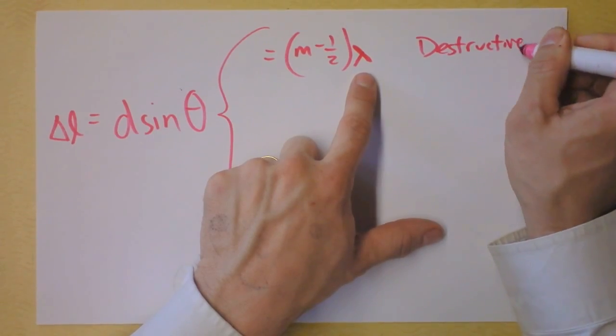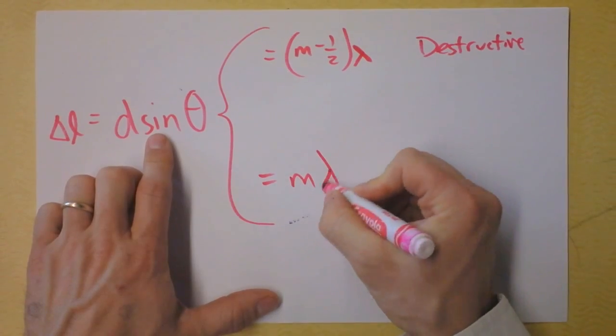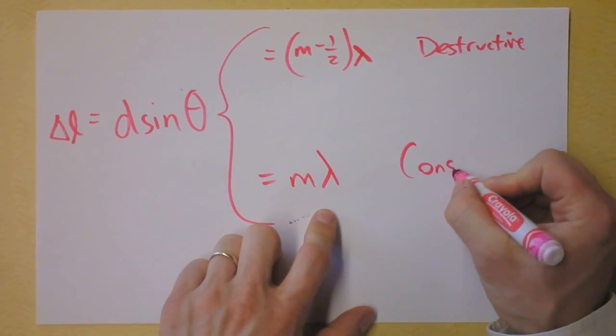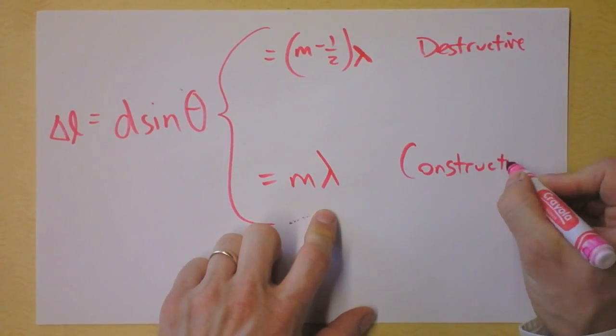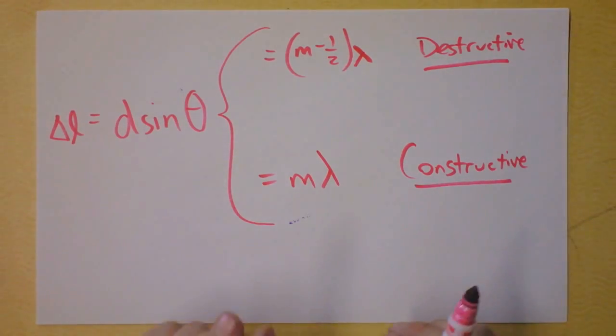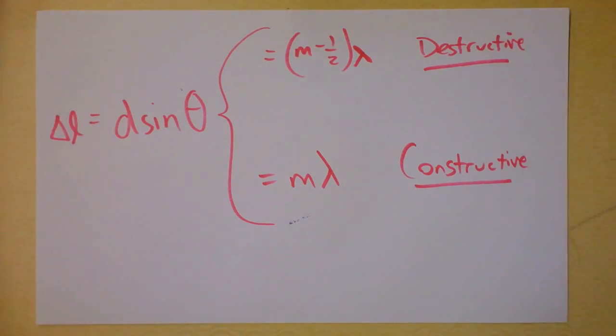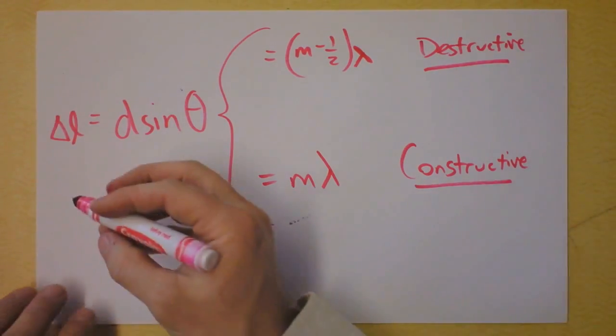if D sine theta is some half integer of a wavelength. This is destructive. There's a song about that. And if D sine theta is M times the wavelength, then we have constructive interference all the time. My point is this. We can now say that if we, oh man, you want a pretty picture? I'm about to give you a pretty picture. Here we go.